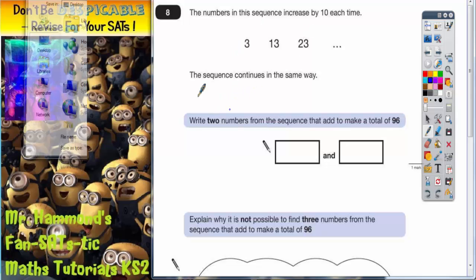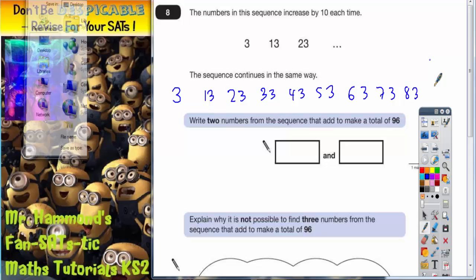So we're going to have to continue the sequence. We've got 3, plus 10, 13, plus 10, 23, another 10, 33, 43, 53, 63, 73, 83, and so on, 93.